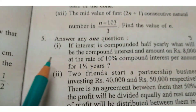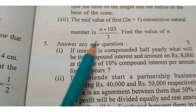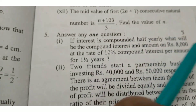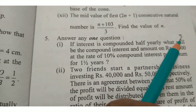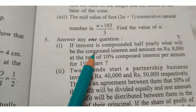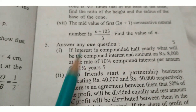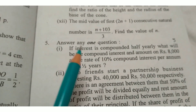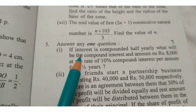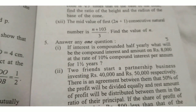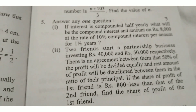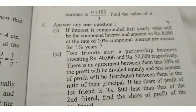Next, Question number 5: From Arithmetic. Answer any 1 question. There are 2 questions here and you answer any 1. This section carries 5 marks.